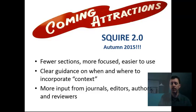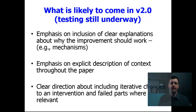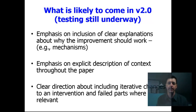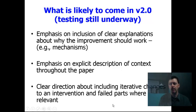Let me give you a preview of what's in SQUIRE 2.0. There will be emphasis on including explanations of why improvements should work — really looking for those mechanisms and the theoretical frameworks that underpin the improvement. There will also be an emphasis on explicit description of context throughout the paper, and clear direction on how to describe iterative changes for an intervention, particularly emphasizing failed parts of interventions and the insights and learnings gathered from those perhaps unsuccessful components.